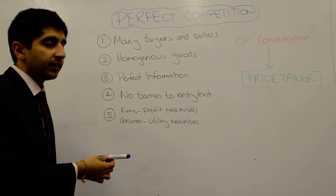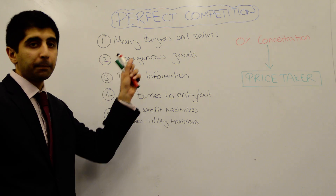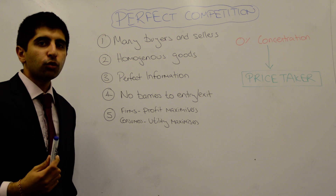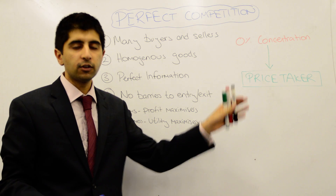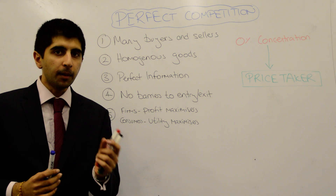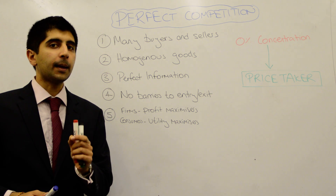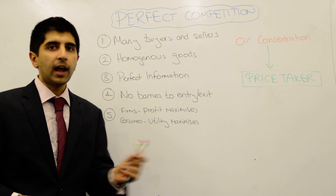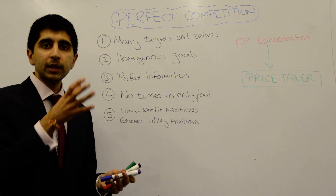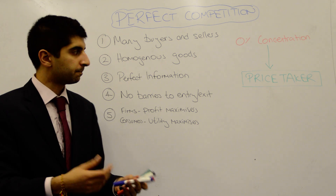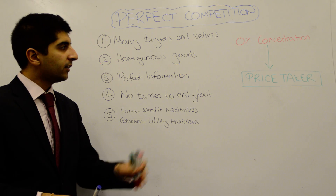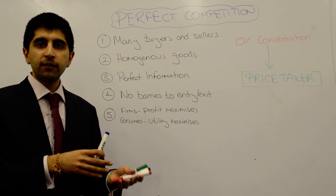As a result of all these characteristics, firms that operate in perfectly competitive markets are price takers. Because of all these quite extreme assumptions, firms have got no choice but to take the price determined by the market mechanism — the forces of demand and supply. If a firm tries to increase the price, all consumers will leave due to perfect information. If it lowers the price, all other firms would follow, meaning the same quantity is sold at a lower price — pointless to do so.